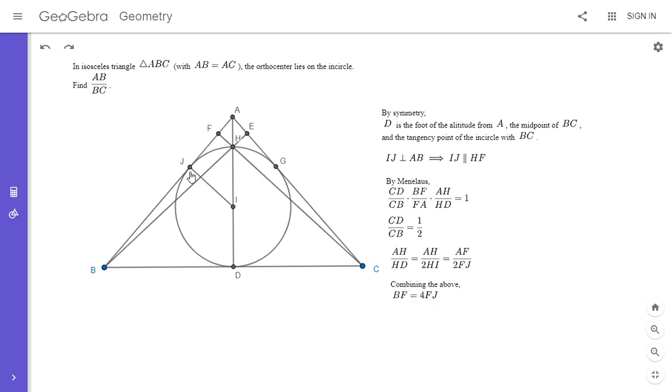So here the problem kind of starts to collapse a little bit. If BF is 4FJ, then it's clear that BJ has to be 3FJ just by subtracting those two. So BJ is 3FJ. And BJ is also equal to BD. And BD is equal to DC. So from here, what I'm going to do is I'm going to note one thing. So before I get too much into the details, here's my strategy to finish off the problem. So we want to find AB over BC.